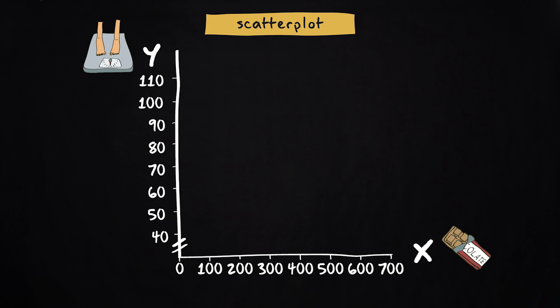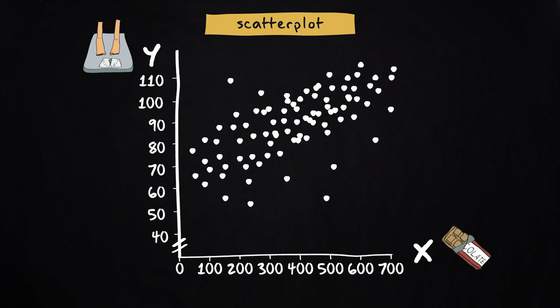Next, we display every individual in this figure. For instance, here is one person that eats 49 grams of chocolate per week and weighs 65 kilograms. Another individual eats 134 grams of chocolate and weighs 73 kilograms. That's here. We do that for all individuals in our sample. And voila, there's the scatter plot.